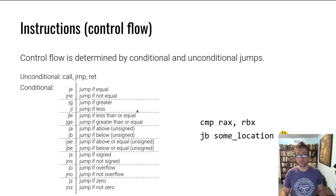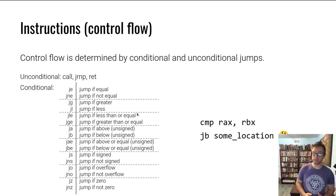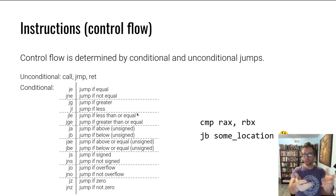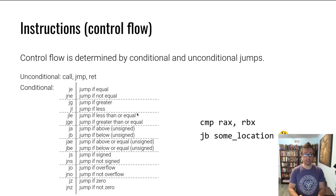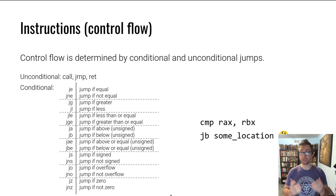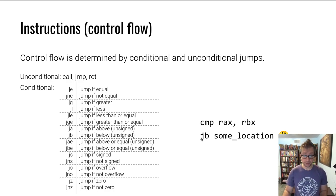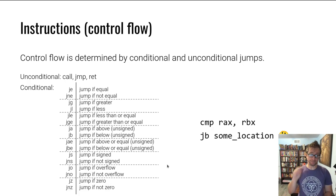Control flow is determined by conditional and unconditional jumps. Just as you have an if statement in C that gets compiled into conditional jumps, function calls compile to CALL instructions, and returns compile to RET. AMD64 supports a number of conditional jump types — you can jump if something is signed (negative), jump if two values are equal, etc. JB means 'jump if below', which is an unsigned less-than, as opposed to JL 'jump if less than', which is signed.